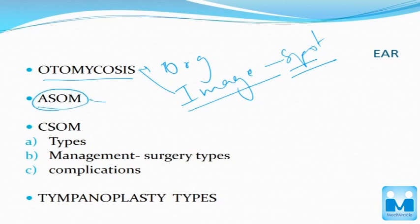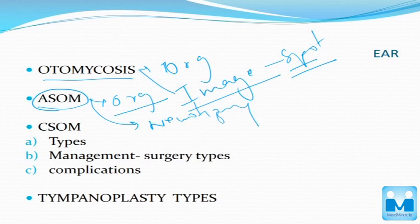In ASOM, you have to know the causative organism. You also have to know necrotizing ASOM — the organism causing it, and its clinical features.